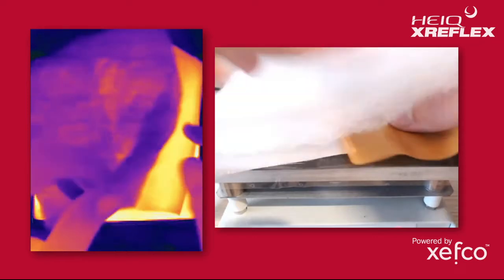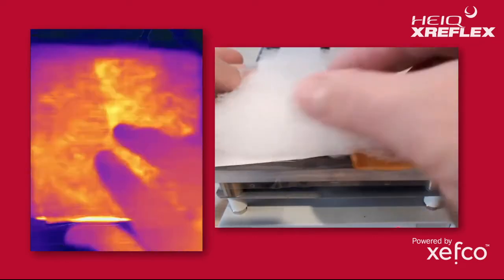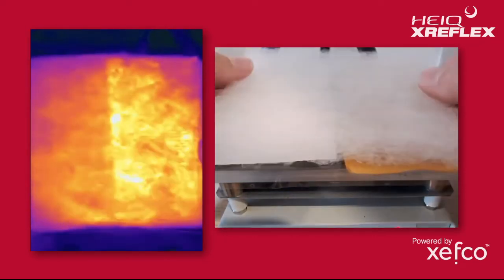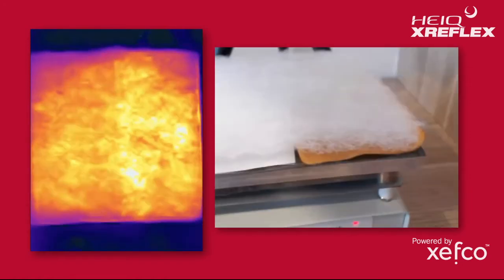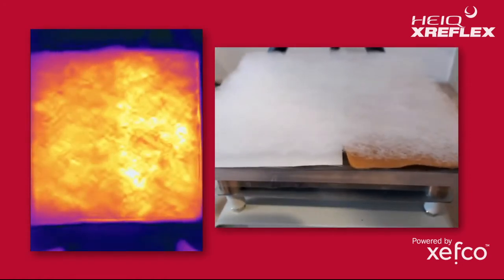Then we layer our insulation layer on top. This is a 60 gsm X-Reflex insulation. You'll see through the insulation there's a big difference in the heat transferring through.